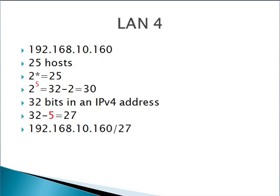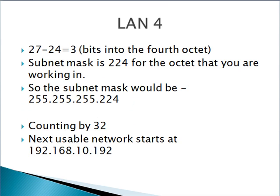Next we move on to LAN 4, starting at 192.168.10.160, also 25 hosts. 2 to the 5th is 32, 32 minus 5 is 27, so we're at 192.168.10.160/27. Once again we're counting by 32, so that gives us our next network starting at 192.168.10.192, with the same subnet mask.